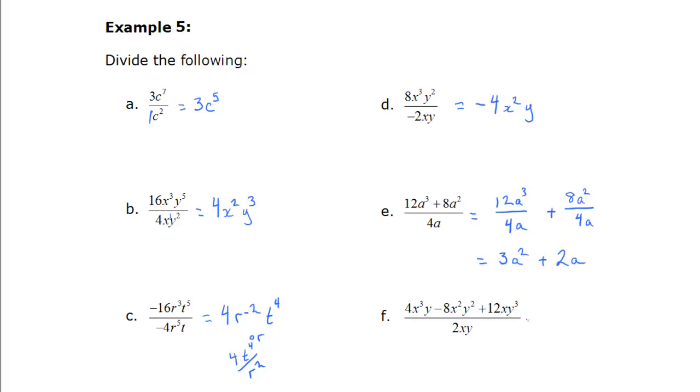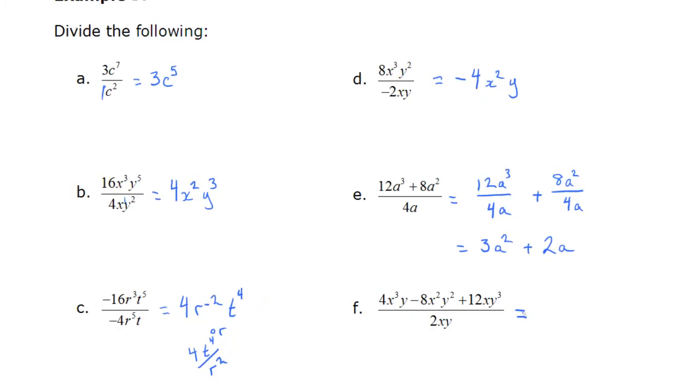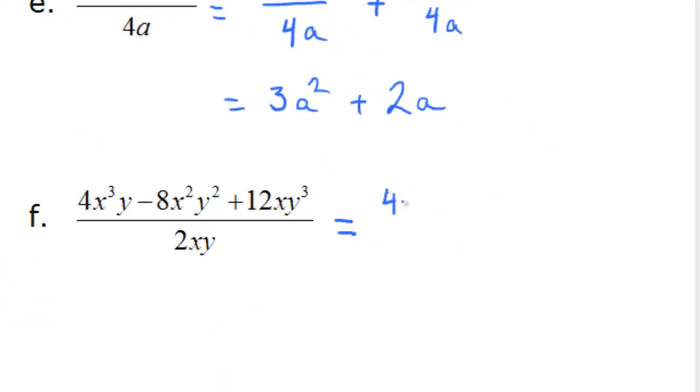And in the last one we can do the same. We'll first write it as three separate fractions or divisions. Putting the numerator in individual parts. And putting the denominator with each one. So it's like undoing a common denominator really. If you want to think about it that way. And that's 2xy there.